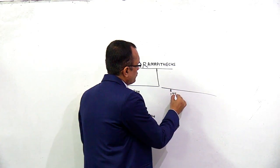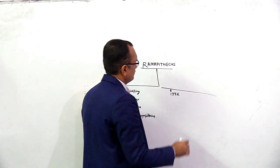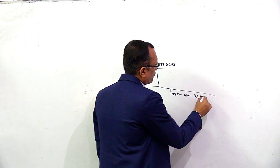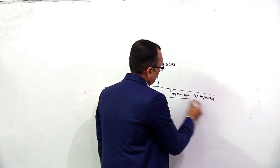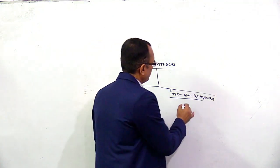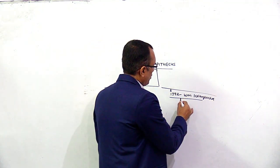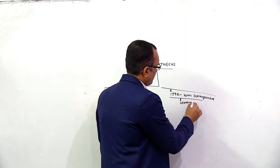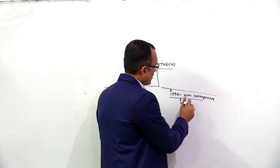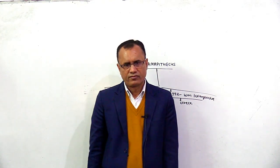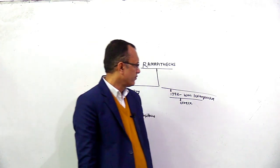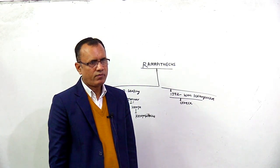In 1972, Quinswad discovered fossils of Ramapithecus from Greece and they called them Graecopithecus.